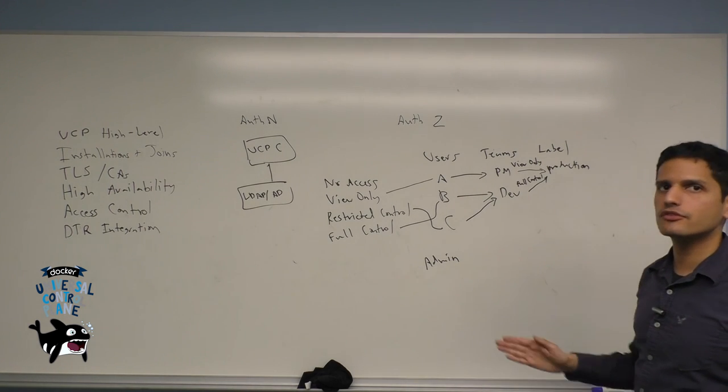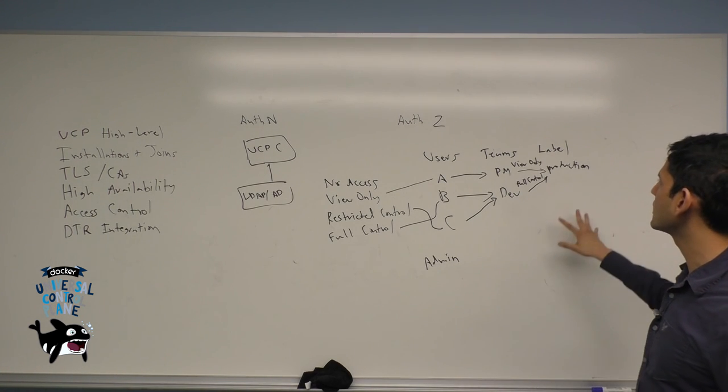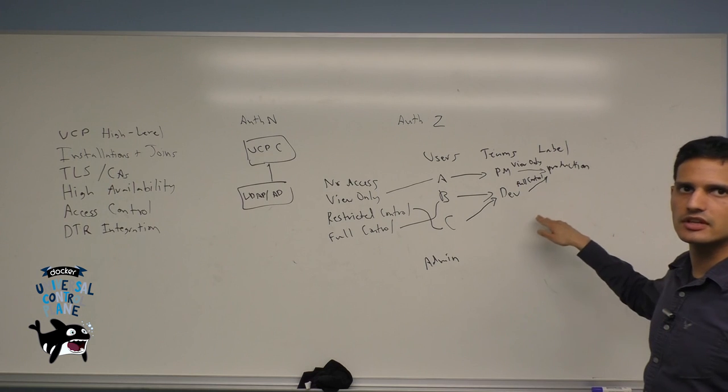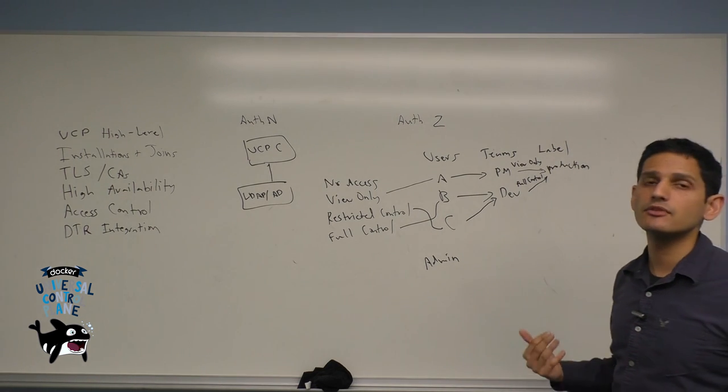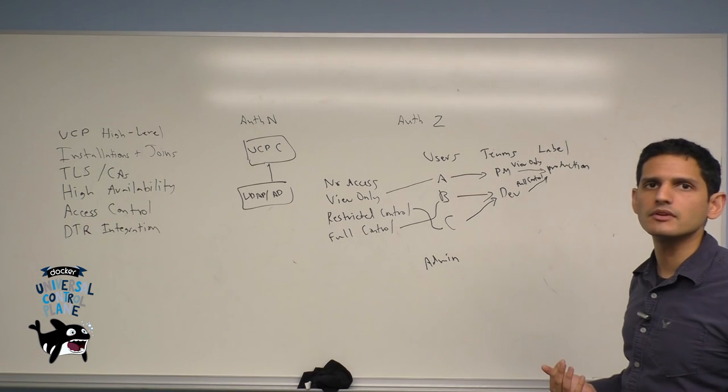So through a combination of user default permissions, as well as label-based permissions for teams, you can define access control in both broad and specific manners within your Universal Control Plane environment.